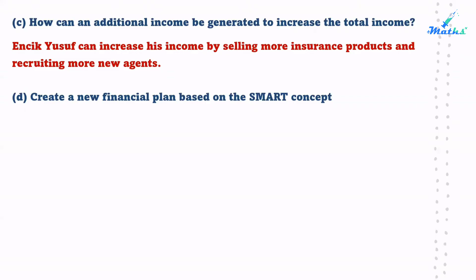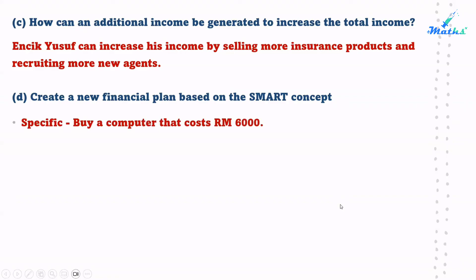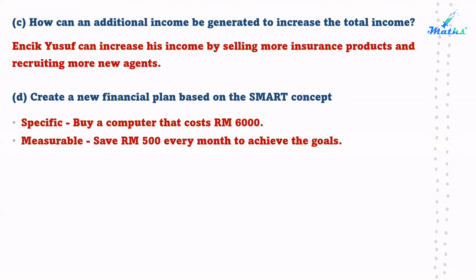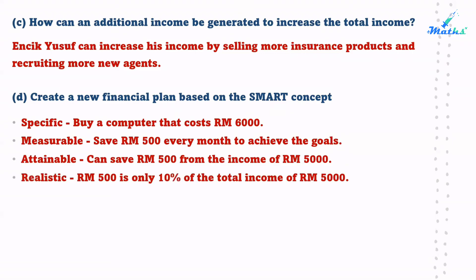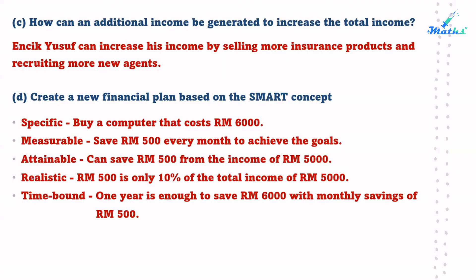Question D: Create a new financial plan based on the SMART concept. S — Specific: buy a computer that costs $6,000. M — Measurable: save $500 every month to achieve the goal. A — Attainable: can save $500 from an income of $5,000. R — Realistic: $500 is only 10% of Enjad Yusuf's total income of $5,000. T — Time-bound: one year is enough to save $6,000 with monthly savings of $500.